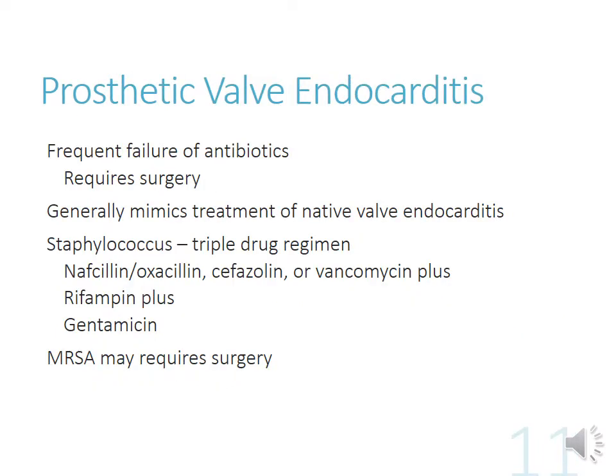Again, you'll use the same empiric coverage, and once cultures come back you gear therapy toward whatever grows. The other group to mention is those with a prosthetic valve — much more difficult to treat because the non-biological material makes it more susceptible to bacterial growth. Antibiotics frequently fail because it's hard to reach high enough concentrations, so surgery to remove and replace the valve is often required. When staphylococcus grows, the high failure rate leads to using a triple drug regimen.